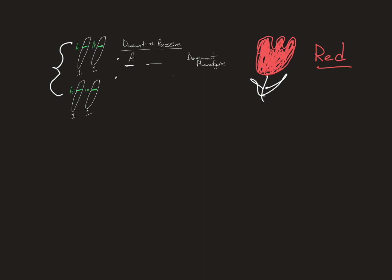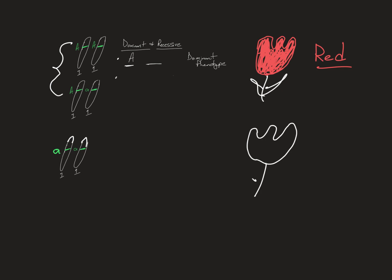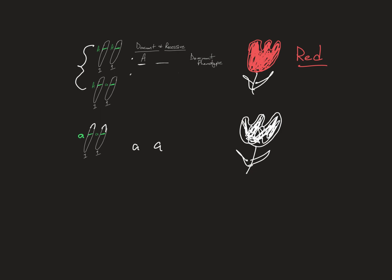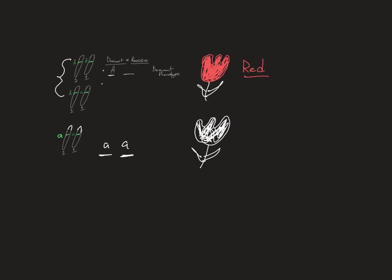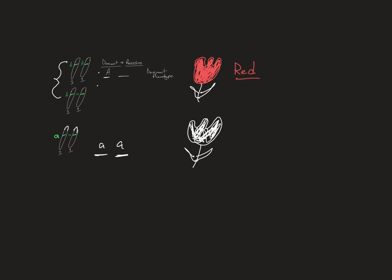Now if you had the homozygous recessive — if dad gave you the recessive version and mom gave you the recessive version — you're going to get the other phenotype. Let's say for argument's sake that it's a white flower. If you have little a little a, that's the only way to get white. That is the definition of recessive. You have two phenotypes, three genotypes, but two phenotypes. There are two ways to get red.